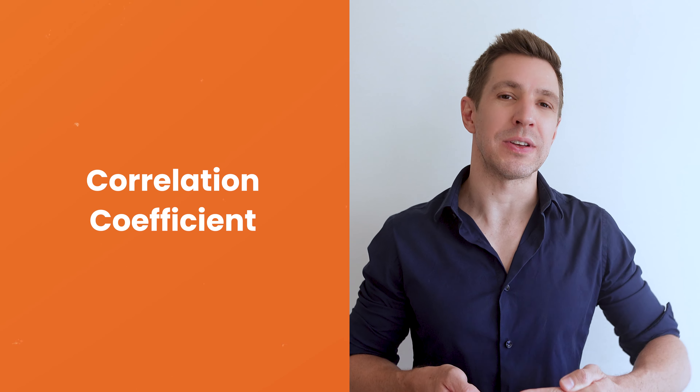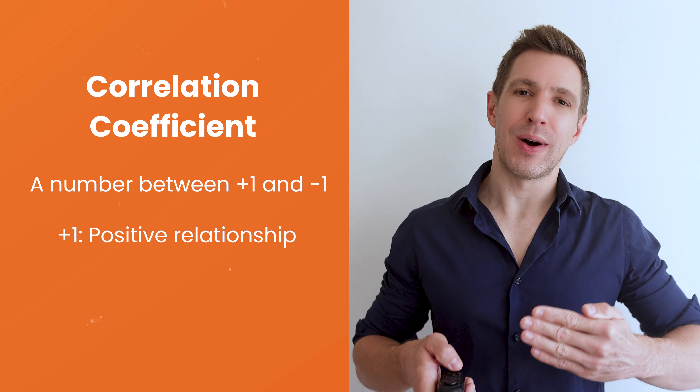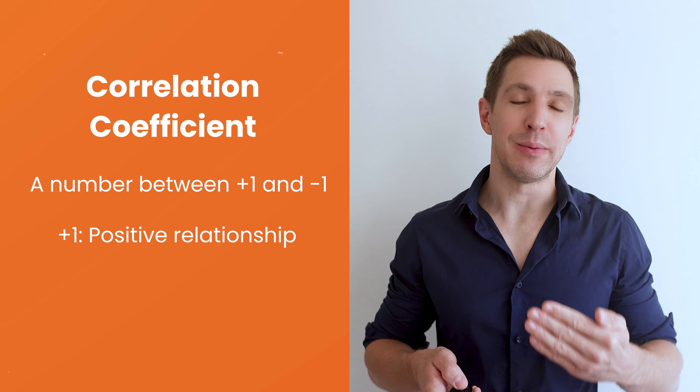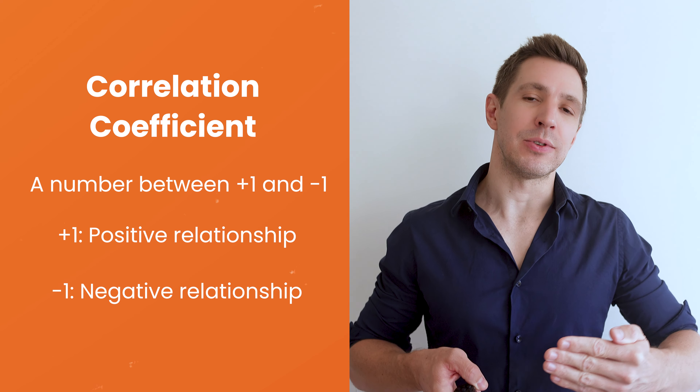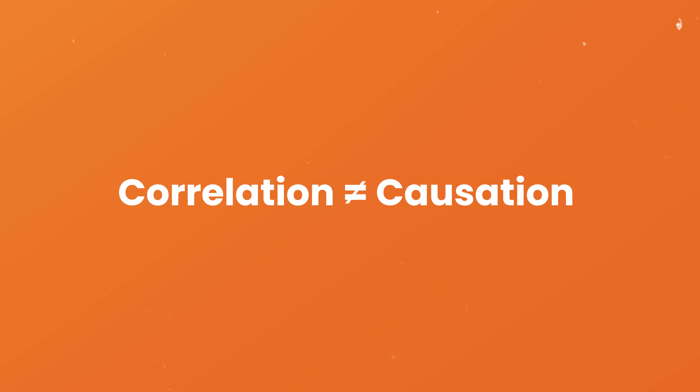When you run a correlation analysis, you'll be presented with a correlation coefficient, also known as an R value. This will be a number between negative one and positive one. A value close to positive one means that the two variables reliably move together in the same direction — as one goes up, the other goes up. A value close to negative one means that the two variables move in opposite directions — as one goes up, the other tends to go down. It's really important to highlight that while correlation analysis can help you understand how two variables are related, it doesn't prove that one variable causes the other. Correlation is not causation, so be careful not to assume that one variable causes another when looking at correlation data.